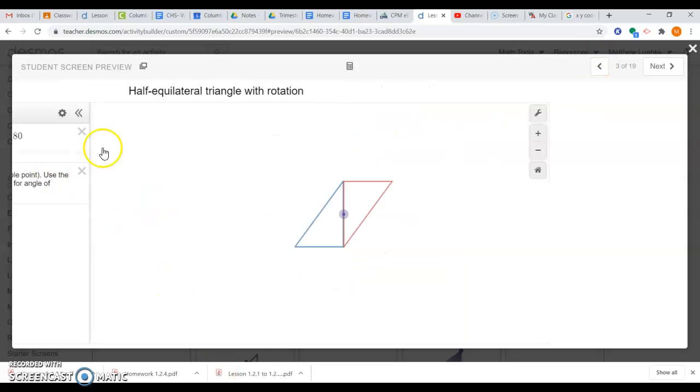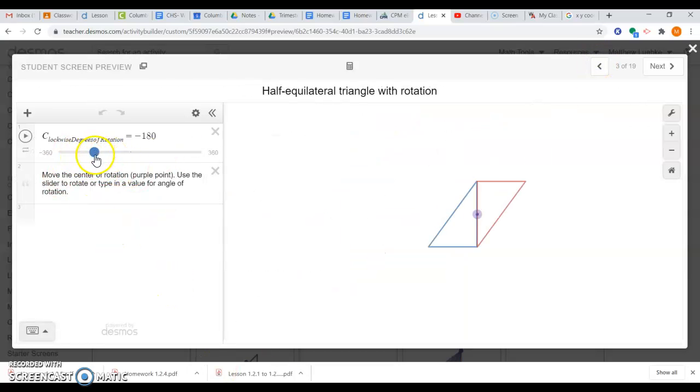Again, on that one, I didn't even rotate, I didn't change my rotation, it was still at 180. And so all I did was drag my purple to a new midpoint. I started at that first midpoint, dragged it over to this one. Let's try the last one down here.